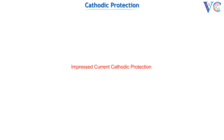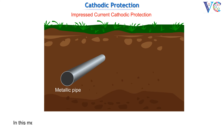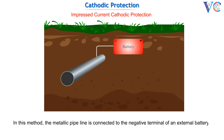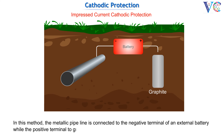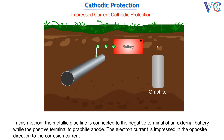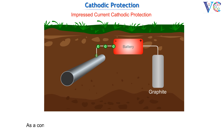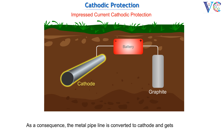Impressed Current Cathodic Protection: In this method, the metallic pipeline is connected to the negative terminal of an external battery, while the positive terminal is connected to a graphite anode. The electron current is impressed in the opposite direction to the corrosion current in the iron pipe. As a consequence, the metal pipe is converted to cathode.